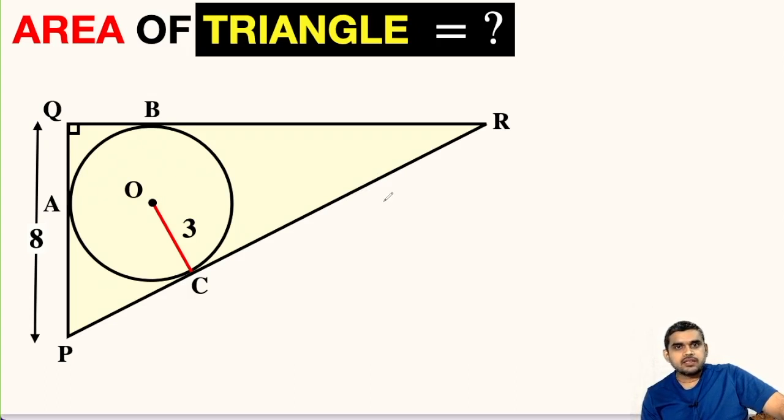Welcome to my YouTube channel. Today I am back with another challenging question. Here we have a right triangle and inside it we have a circle of radius 3 units. One side of the triangle, PQ, is given as 8 units and we need to find its area.